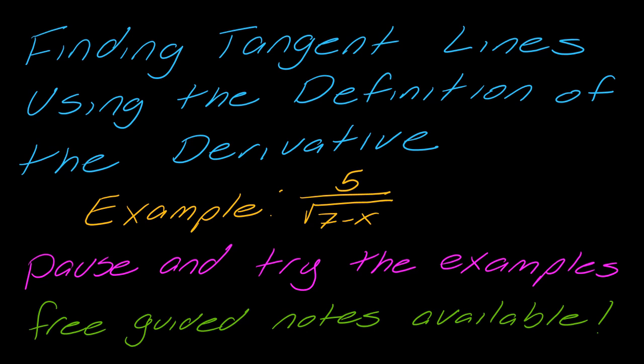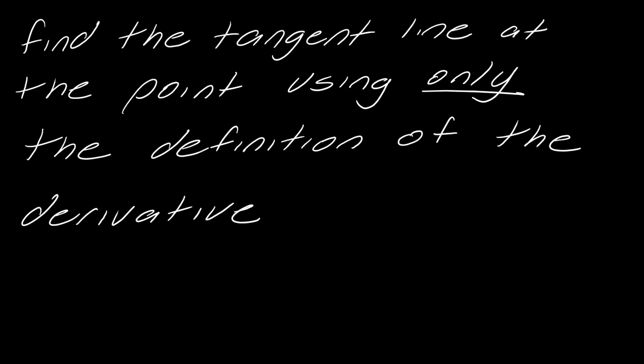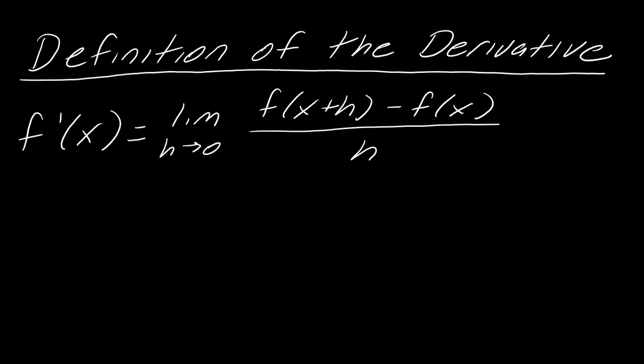Hey guys, so I have an example video here that was actually a request. I totally read over your requests and I make videos when you submit them. The request was to have a square root in the denominator and have to use the definition of the derivative. So for this example, this is going to be kind of a longer example because it is a little bit technical. We want to find the tangent line at the point using only the definition of the derivative, and here's the definition of the derivative.